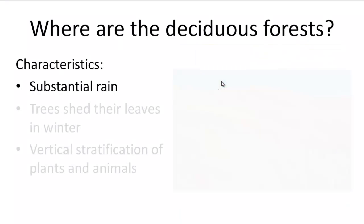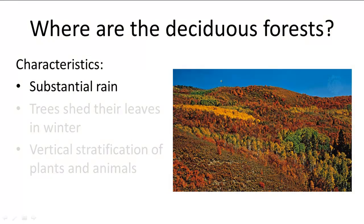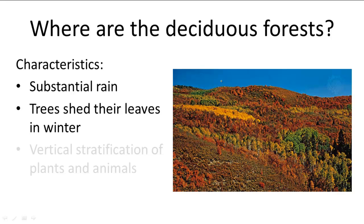As is obvious by their name, the deciduous forest biome is dominated by deciduous trees, and that means they shed their leaves in the winter and bloom again in the spring. This biome also has a much greater diversity of plants and animals than either the grassland or the desert.